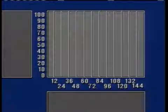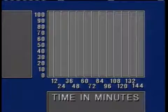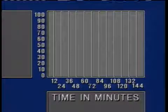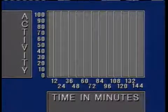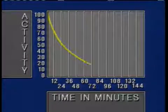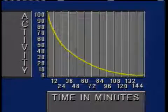A graph will show that as time goes on, the activity decreases. During each 24-minute interval, the amount of radiation given off by the sample drops in half.